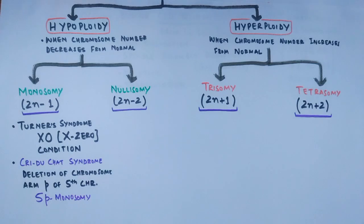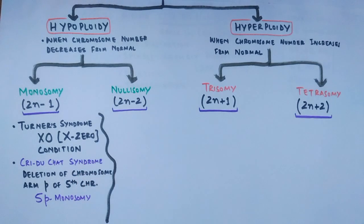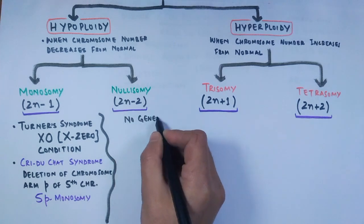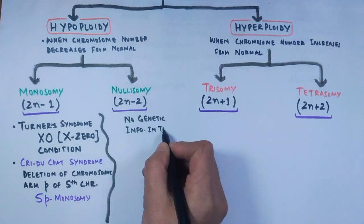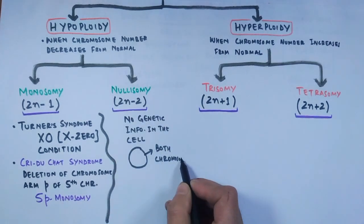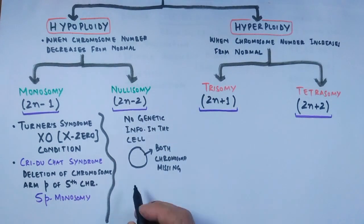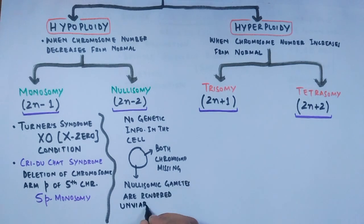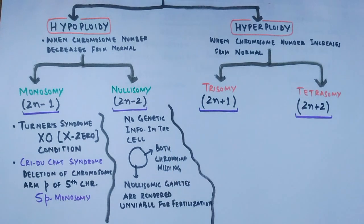In nullisomy aneuploidy, the gamete cell does not receive a homologous pair of chromosomes at all — two chromosomes are missing from the cell, meaning no complete genetic information is present. As a result, nullisomy gametes are rendered non-viable for fertilization.